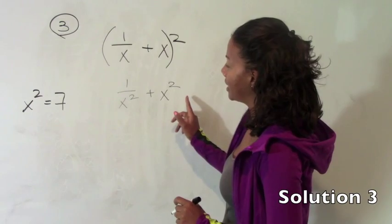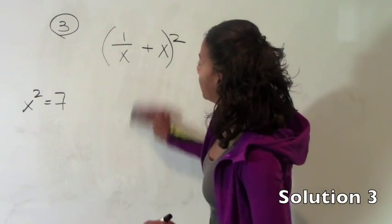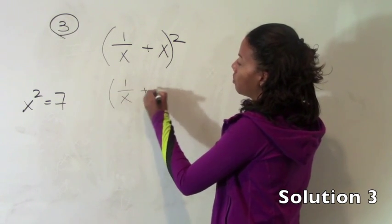So if you got 1 7th plus 7, that's not right. What you need to do, if you're not sure how to just look at it, is to expand it. Rewrite this. 1 over x plus x all squared means 1 over x plus x times 1 over x plus x.